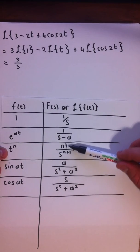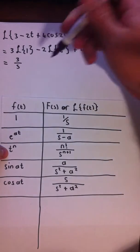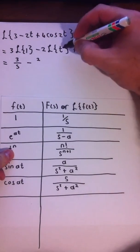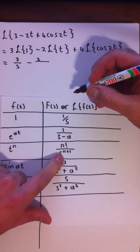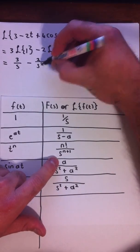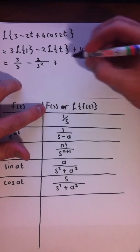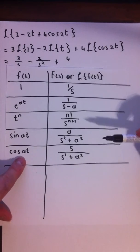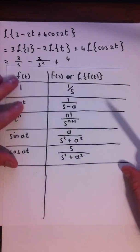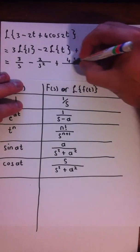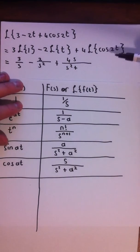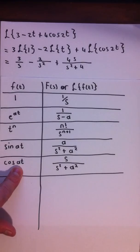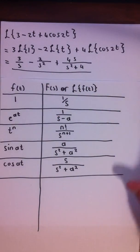The Laplace transform of t^n equals n factorial over s^(n+1). So that gives us minus 2 times 1 factorial over s^(1+1), which is 1/s². For the cosine term, the Laplace transform of cos(at) is s over s² plus a². So we get plus 4 times s over s² plus 2², which is 4. That's the answer to the first example.